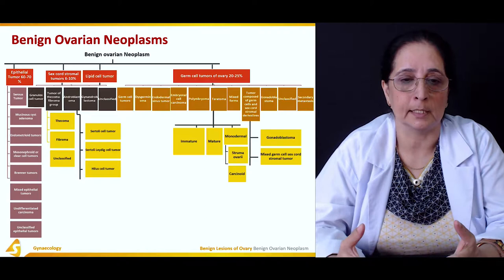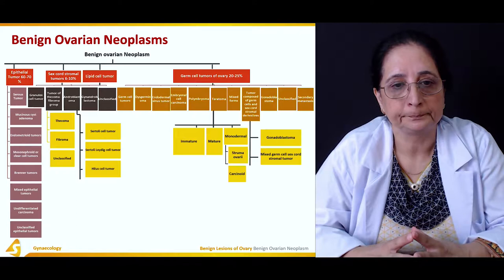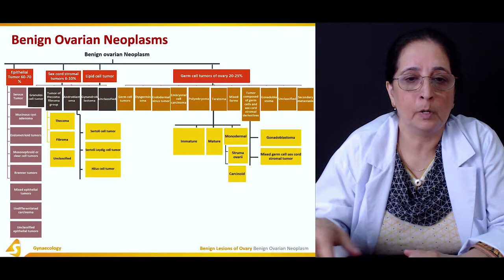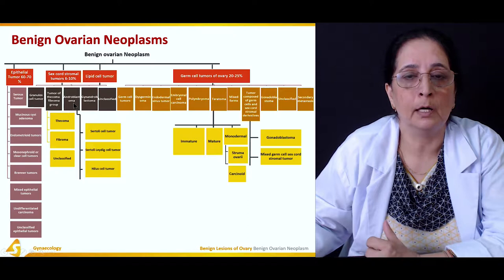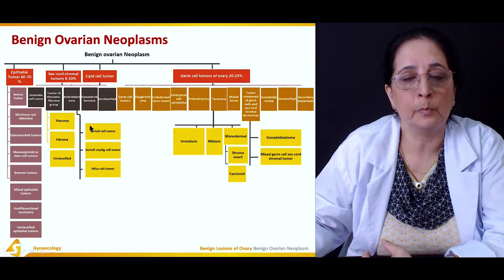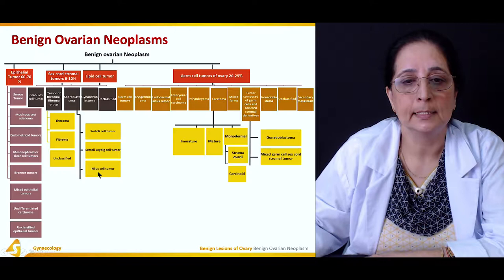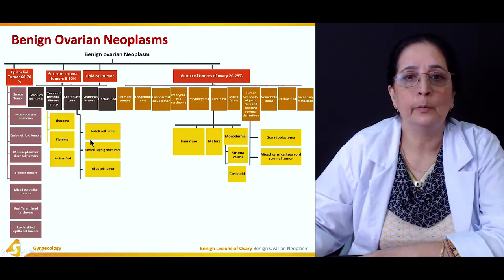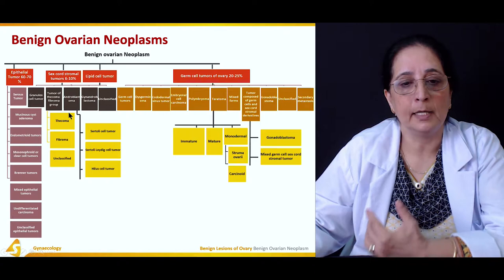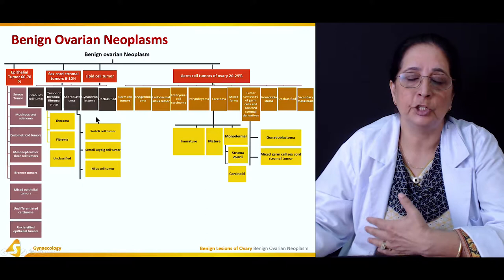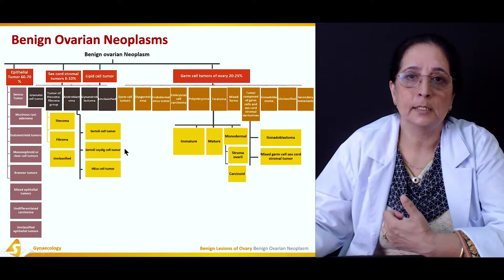Undifferentiated and unclassified tumors appear across all groups when cells cannot be clearly categorized. Within the thecoma-fibroma group, subtypes are thecoma, fibroma, and unclassified. Androblastoma is further subdivided into Sertoli cell tumor, Sertoli-Leydig cell tumor, and Hilus cell tumor.